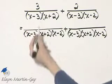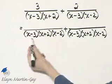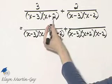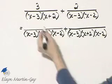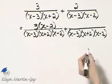And now, let's look at each rational expression. What do I multiply this denominator by in order to have this common denominator? I will multiply the denominator by x minus 2, so I must multiply the numerator by x minus 2.